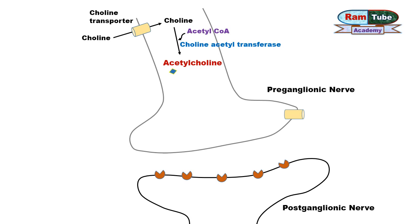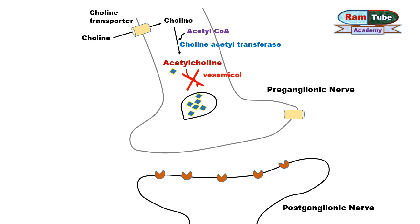In the next step, acetylcholine is transported into presynaptic vesicles with the help of a specific carrier protein, where it is stored to avoid degradation. This carrier transport can be inhibited by vesamicol.